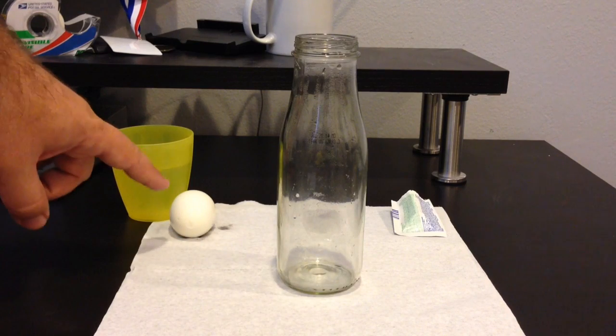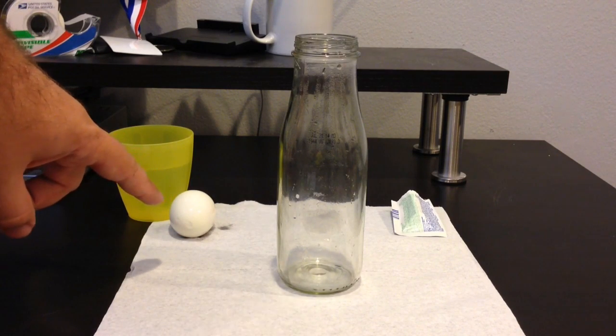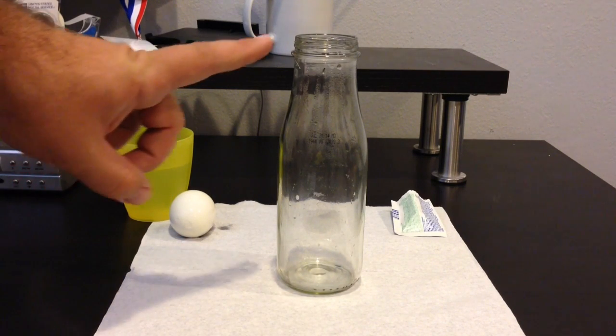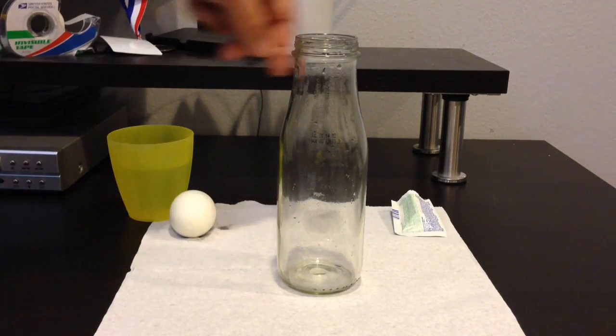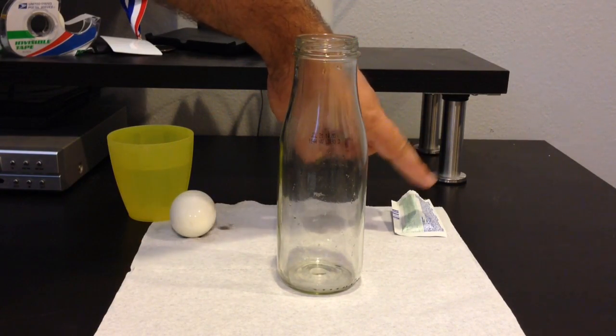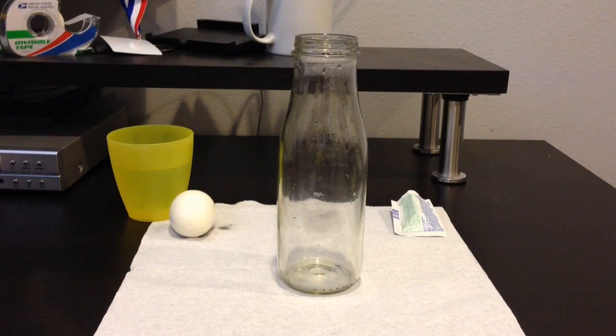So now that we got our egg hard-boiled, we're going to try to get it in the bottle, but we're also going to be getting it out of the bottle. And how we're going to do that is we're going to be using some Alka-Seltzer. So let's get to the first part of it.